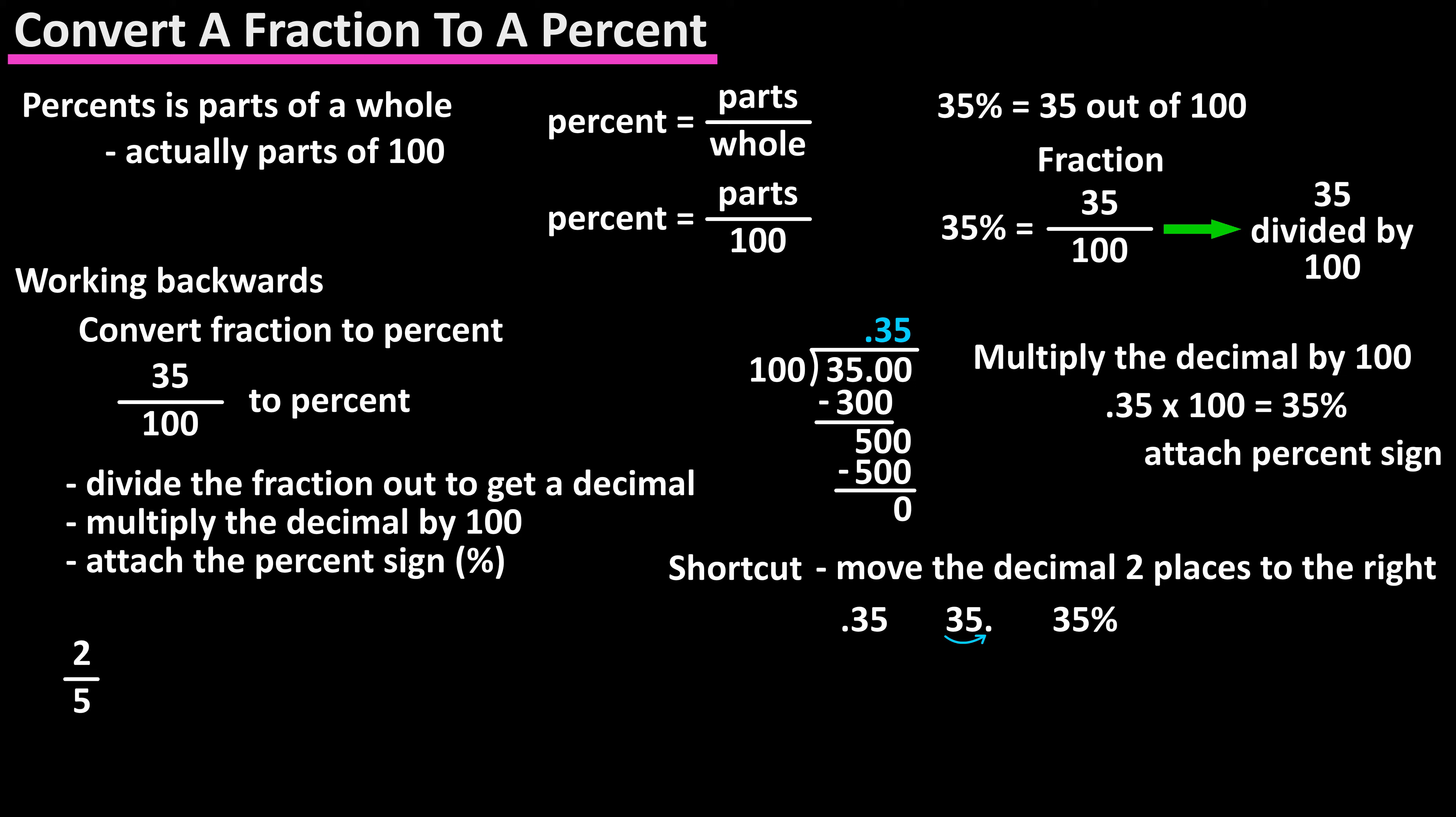For example, the fraction 2 over 5, 2 divided by 5 is 0.4. We move the decimal two places to the right, attach a zero, and add in the percent sign to get 40%.